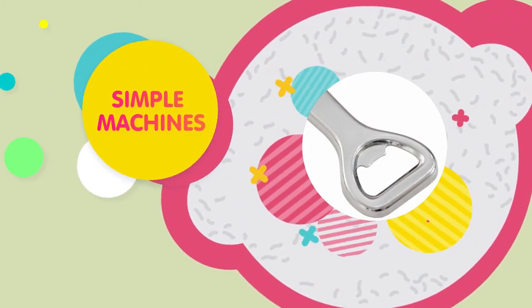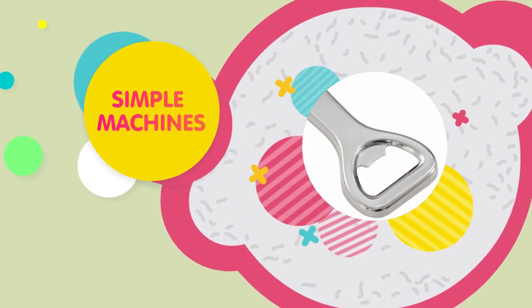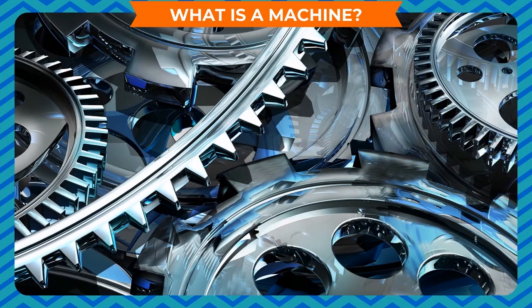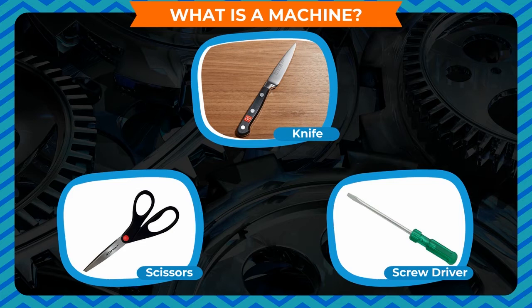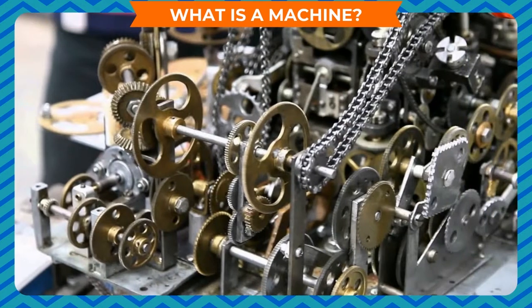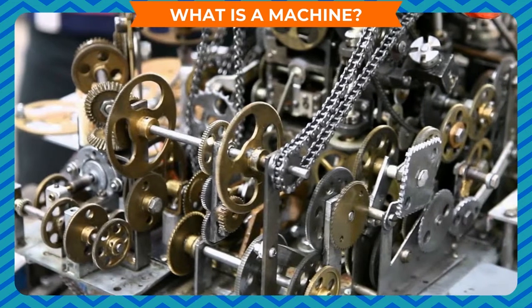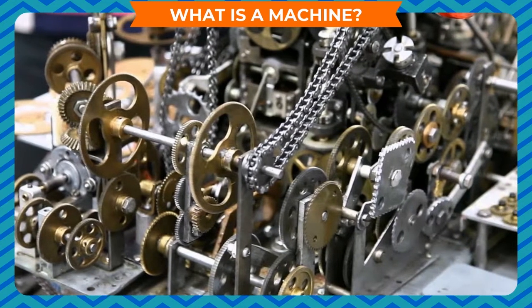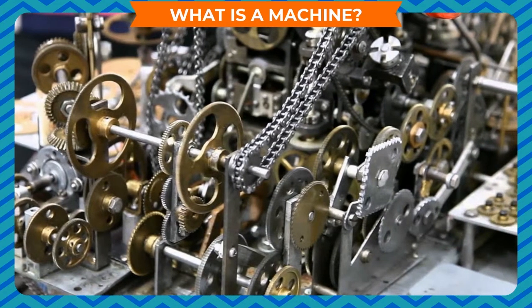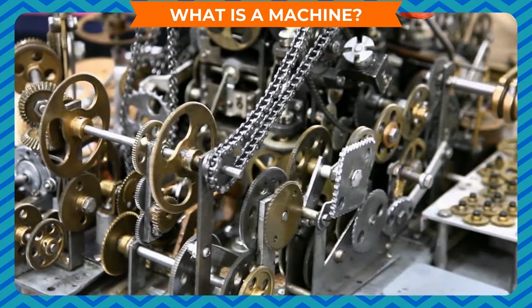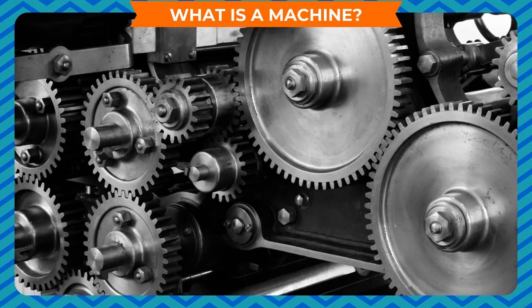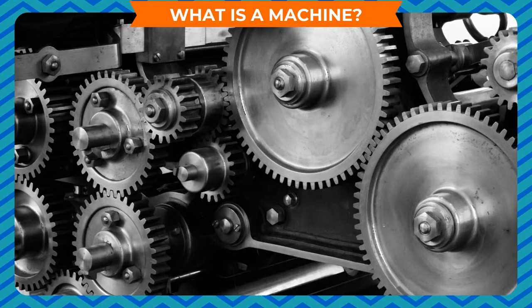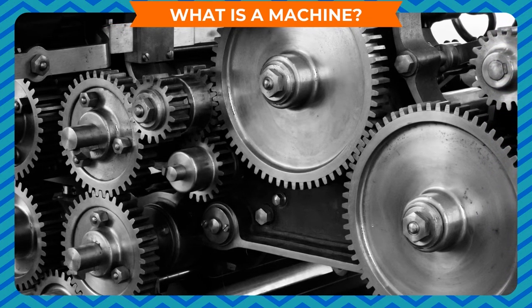Simple Machines. What is a machine? You see a knife, scissors, or screwdriver in your house. If someone says that all these things are machines, will you believe it? Perhaps you will not. But this is true. They all are machines. A machine is a tool containing one or more parts that uses energy to perform a particular action.